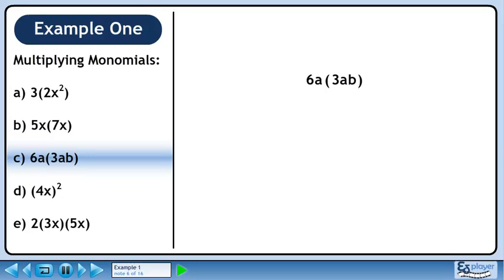In part c, we will multiply 6a and 3ab. Multiply the coefficients 6 and 3 to get 18. Multiply the a's to get a squared. Carry forward the b to get the answer 18a squared b.